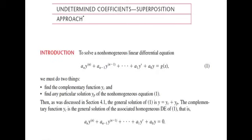The first method we will use to solve a non-homogeneous linear differential equation of higher order is the method of undetermined coefficients. Homogeneous equations are those in which the right-hand side is zero, and non-homogeneous equations are those in which the right-hand side is non-zero. An important point in this chapter is that we are dealing with higher-order linear differential equations in which the coefficients are constants.